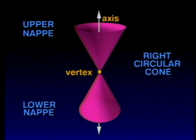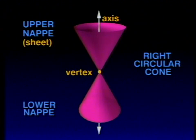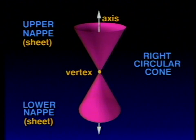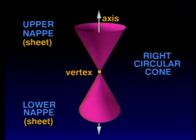This word, 'nap,' comes from a French word meaning 'sheet' and is the same word from which we get our word 'napkin.' These two naps are, in fact, circular sheets originating at the vertex.